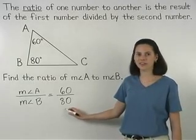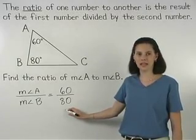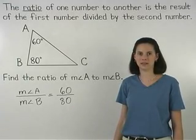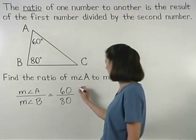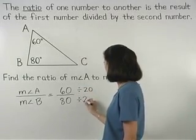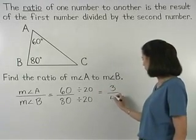Notice that 60 over 80 can be reduced because 60 and 80 have a greatest common factor of 20. So we divide both 60 and 80 by 20 to get 3 over 4.